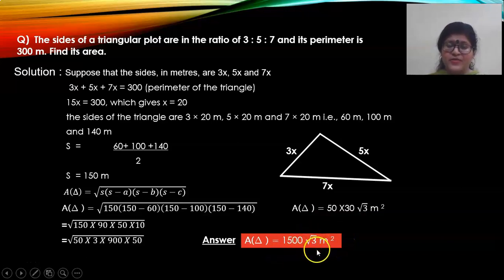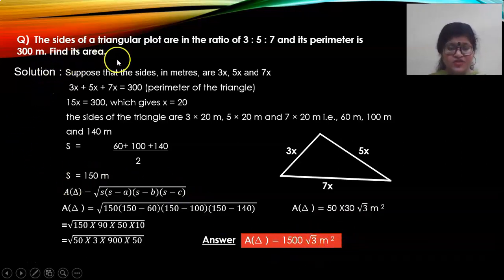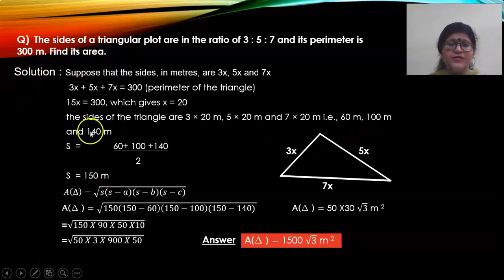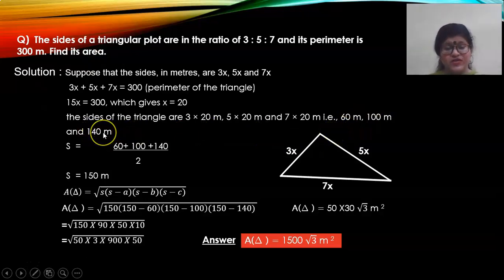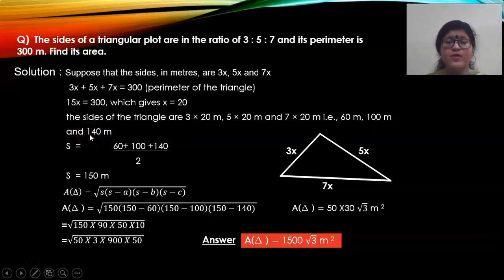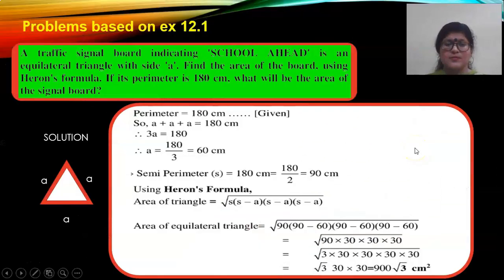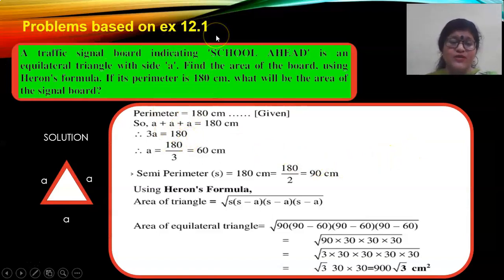1500 root 3 meter square is the area of this triangle having sides 60, 100, and 140 meters. I hope you have understood this problem. Please make a note of this and write down this solution in your assignment sheet or notebook. This problem is based on exercise 12.1.